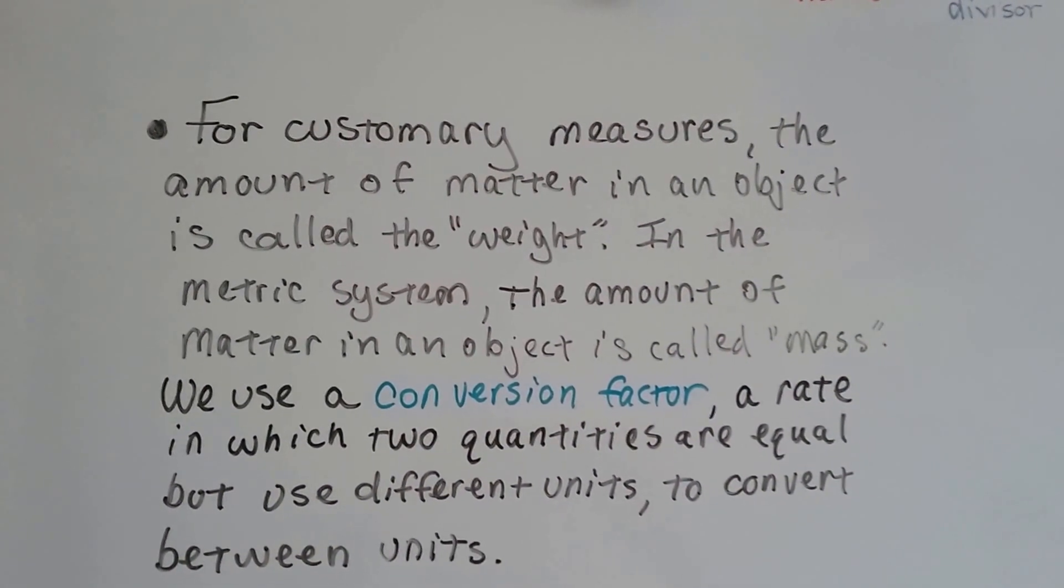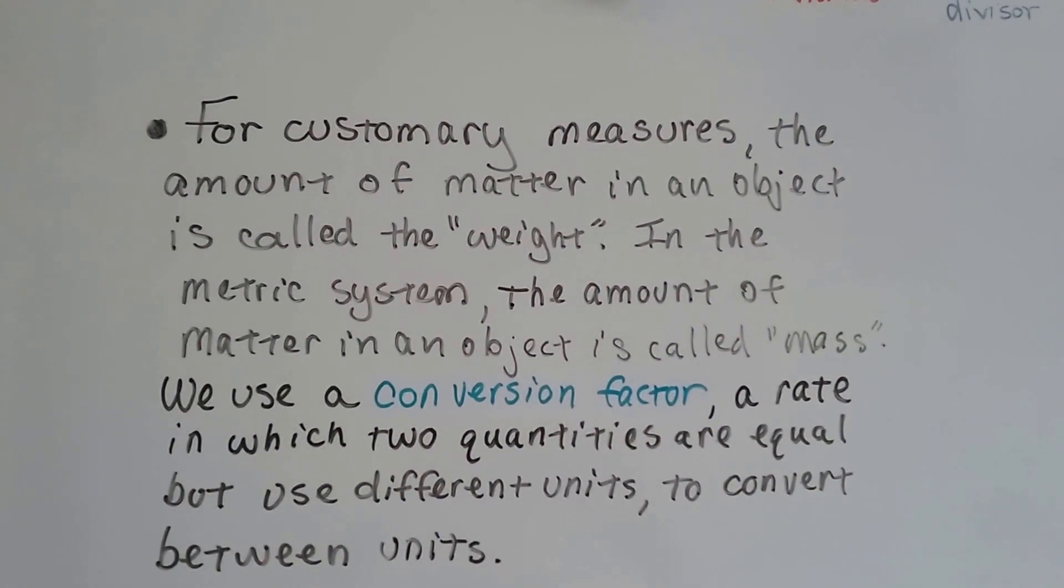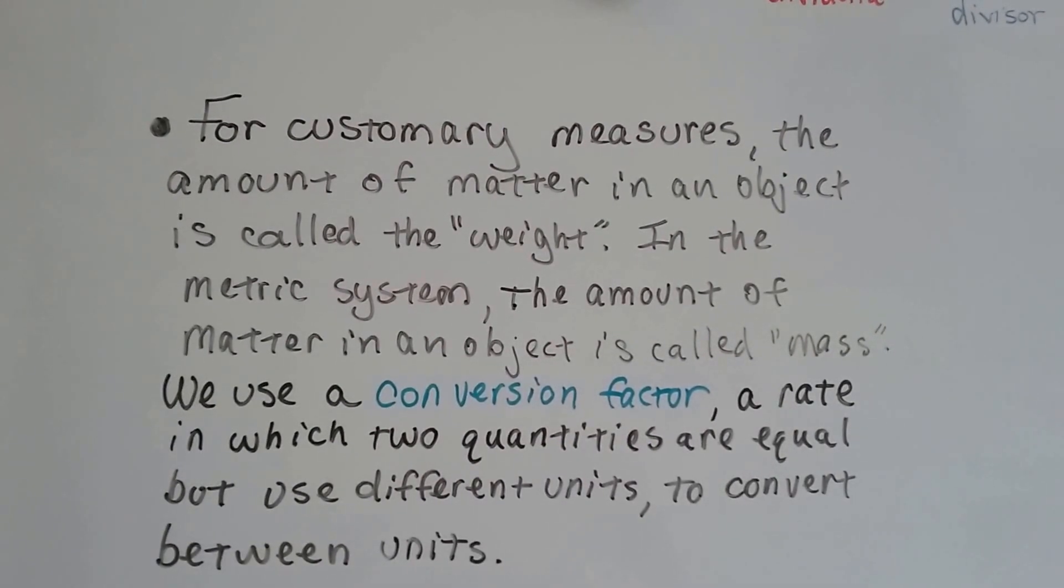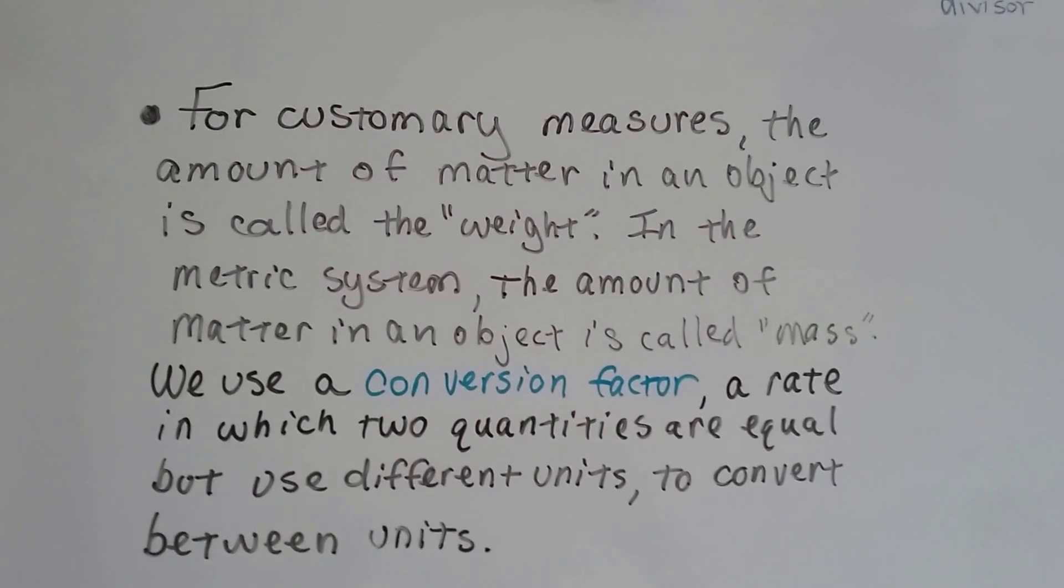For customary measures, the amount of matter in an object is called the weight. For US measures, we say weight. But in the metric system, the amount of matter in an object is called mass.